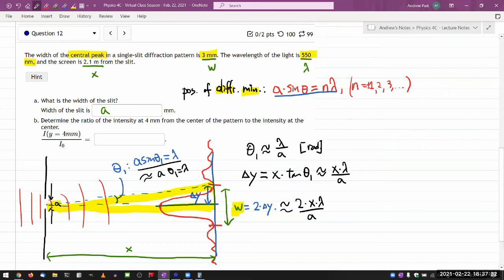And this approximation should be valid in the limit that lambda over A is very small. And looking at this 3 millimeter for A and 550 nanometer for lambda, I think the approximation is going to hold. So I need to solve this for A. So the width of the slit A is equal to 2x lambda over width of the pattern. So A is equal to 2x lambda over W. And I will leave it up to you to plug in the numbers.